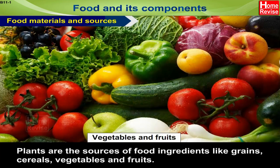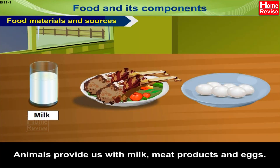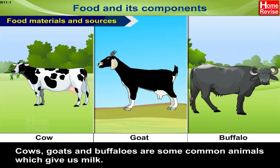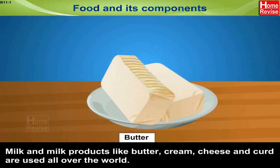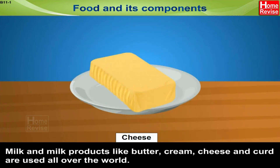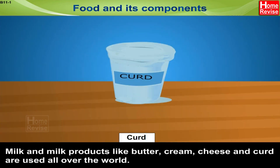Plants are the sources of food ingredients like grains, cereals, vegetables, and fruits. Animals provide us milk, meat products, and eggs. Cows, goats, and buffaloes are some common animals which give us milk. Milk and milk products like butter, cream, cheese, and curd are used all over the world. Yes, even the burgers and pizzas that you love to eat have cheese made out of milk!